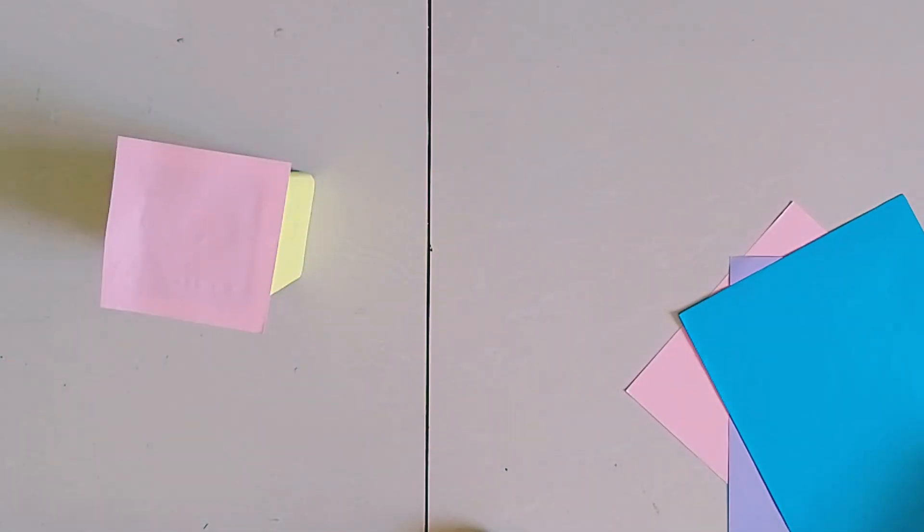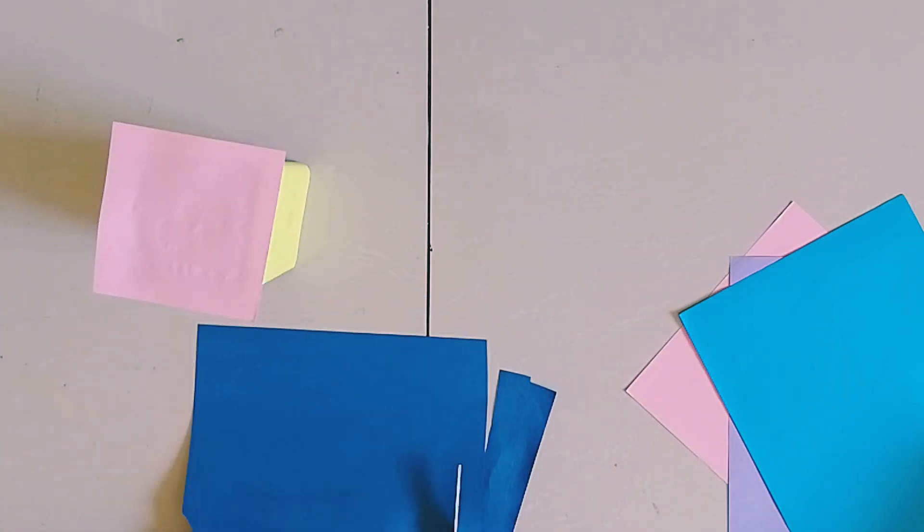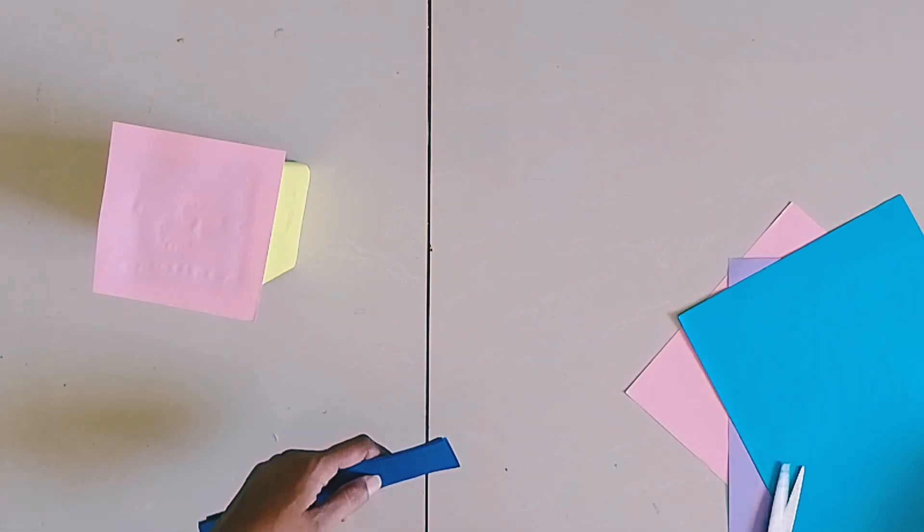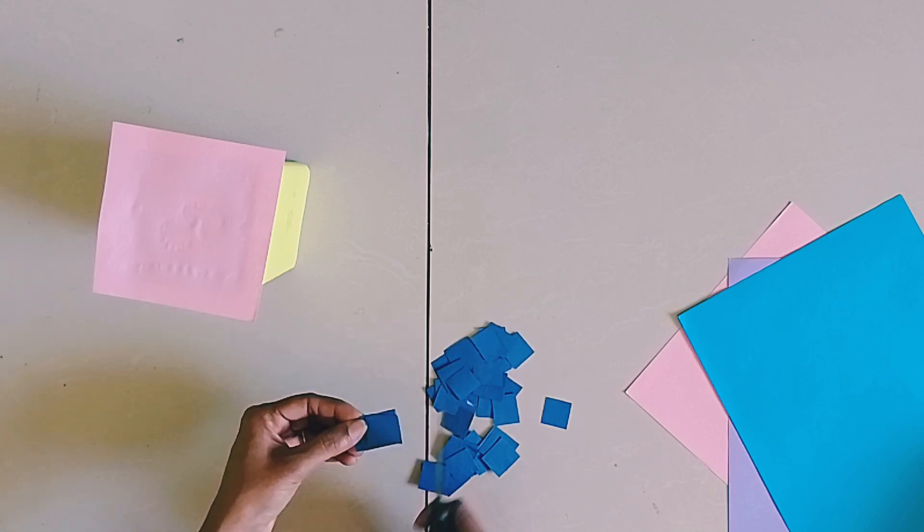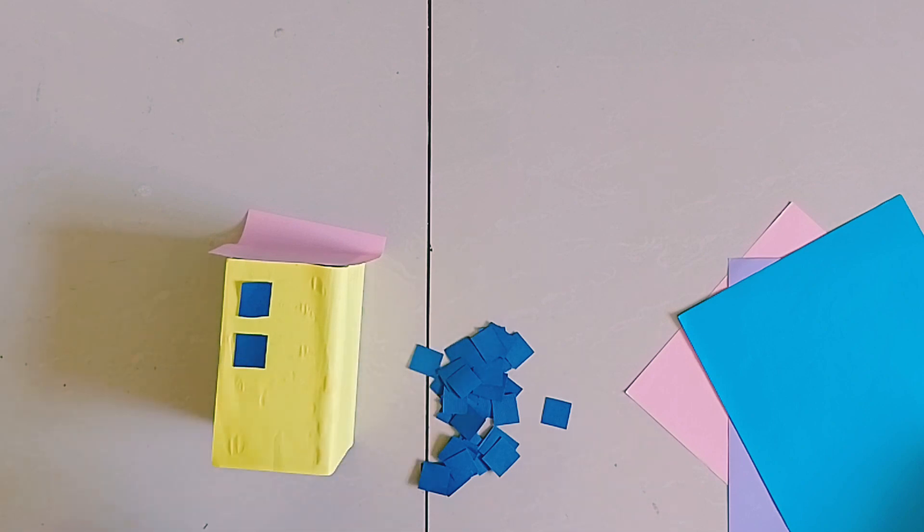Take a pink paper and stick it above at the top in any colored paper for the shade of the building. Cut like this some paper for the windows of the buildings, black or blue, anything it's your wish.